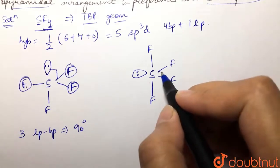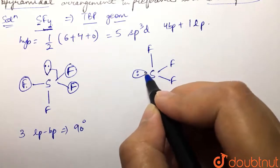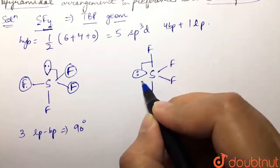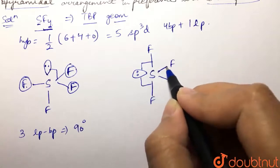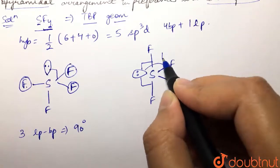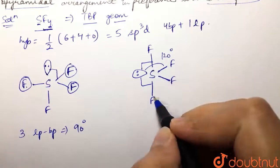In this case, this lone pair is present at 90 degrees to this fluorine and this fluorine only, because these bonds are present at 120 degree bond angles. So we have only two lone pair bond pair repulsions present at 90 degrees.